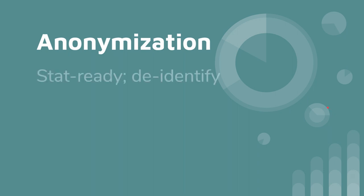Anonymization simply refers to making something statistic-ready, or basically de-identifying it. For example, if you had a database full of social security numbers you were getting ready to publish, you'd want to remove the SSNs and only publish information that is not identifiable. If you had my SSN along with my height, weight, and hair color, removing the SSN would de-identify it, because many people would fit the same physical description — making it statistics-ready.